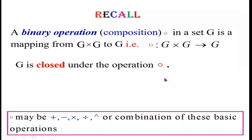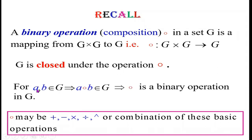The definition of the closure property is: take any two elements from G, operate the operation upon elements A and B, and A circle B becomes a single element that belongs to G. In that case, star is a binary operation in G, and this property is called the closure property.